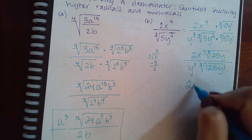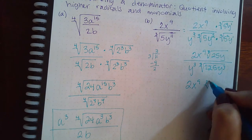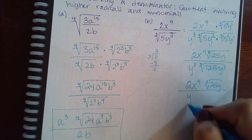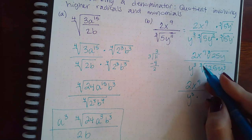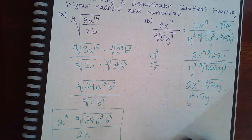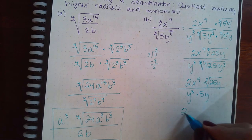So I'm going to rewrite my numerator. And my denominator is this y cubed times the cube root of 125 is 5. The cube root of y cubed is y. And so I'm almost finished.